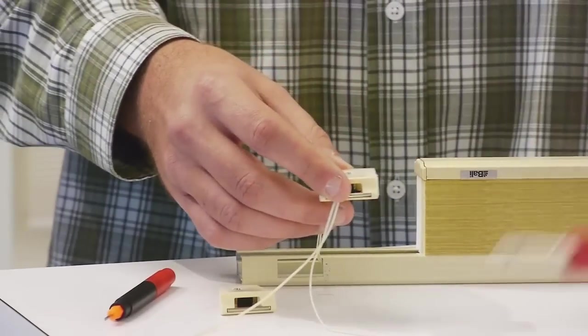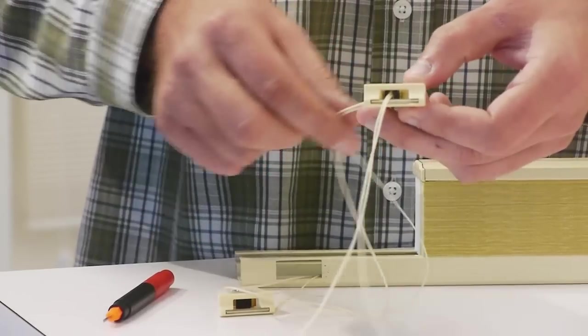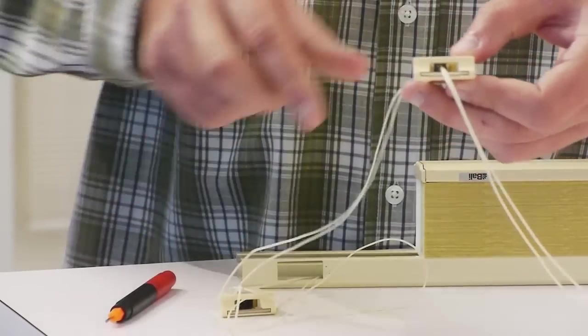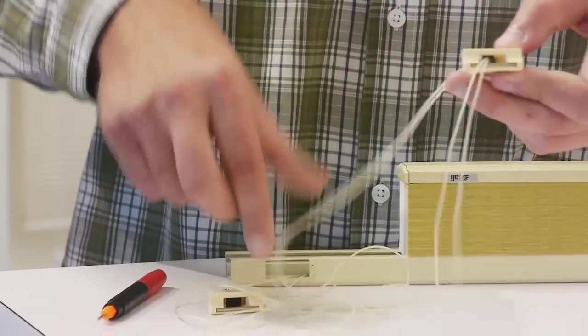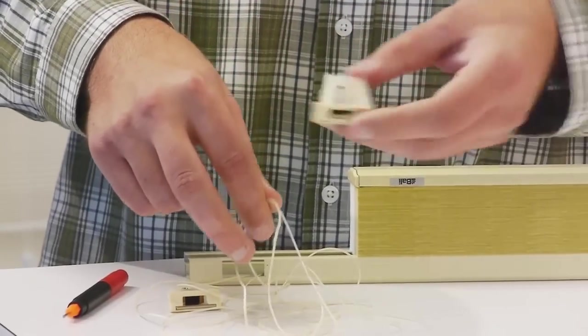Now what we can go ahead and do is just gently slide the string from the back of the cord lock. We'll go ahead and pull it all the way through to release the cord lock. There we go. We have the old one out.